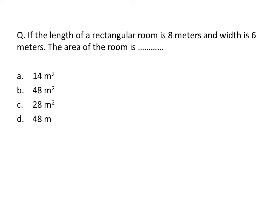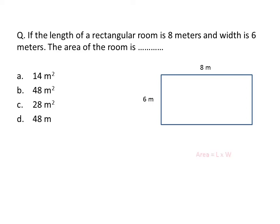First question: if the length of a rectangular room is 8 meters and width is 6 meters, then the area of the room is? We have a rectangular room with length 8 meters and width 6 meters. We know that the area formula for a rectangle is length multiplied by width. So we put the values: 8 multiplied by 6 gives us 48. Now the unit for area is square meter, because meter times meter equals square meter.